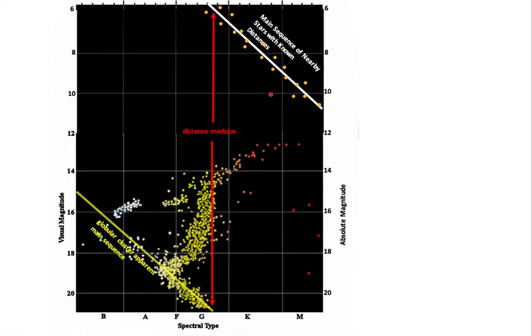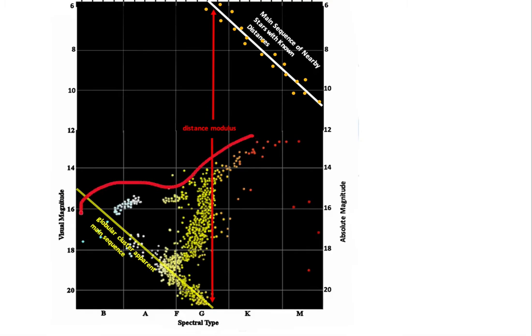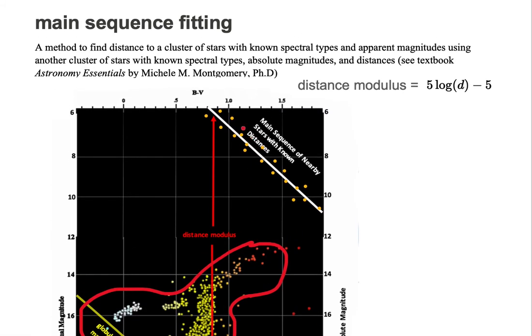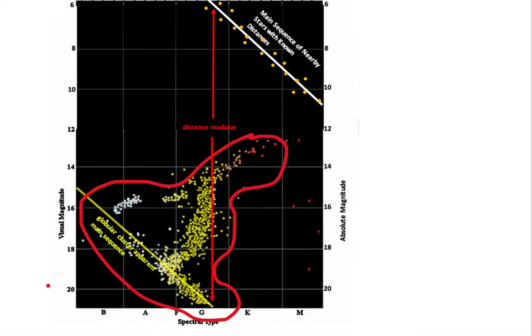First of all, we want to find distance to a cluster of stars. So here we have a cluster of stars that we would like to find distances to. The only thing we know about this cluster is their spectral types and their apparent magnitudes. Their apparent magnitudes are plotted on the vertical axis and the spectral type is plotted on the horizontal axis.